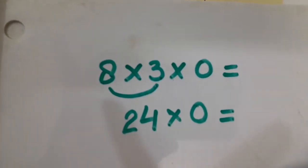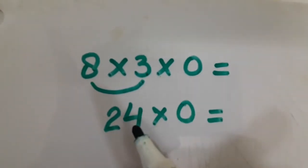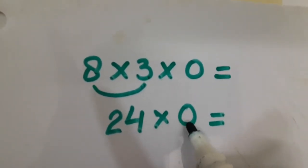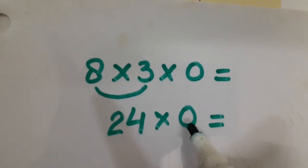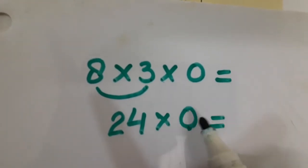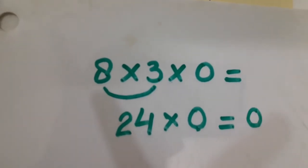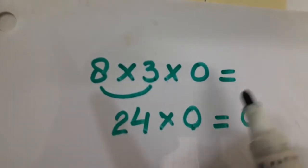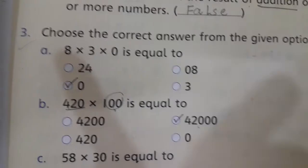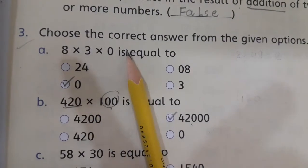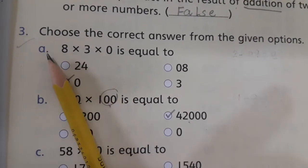As I told you in my previous lecture, whenever we multiply any digit with 0, our answer will remain 0. Whenever we multiply any digit with 0, our answer will be 0.